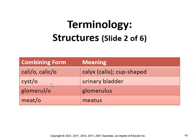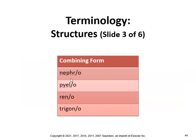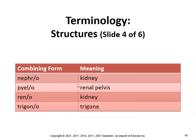Glomerul gives us glomerular, meaning pertaining to the glomerulus. Meatus gives us meatal stenosis or meatotomy, which is incision of a meatus. Nephro means kidney.